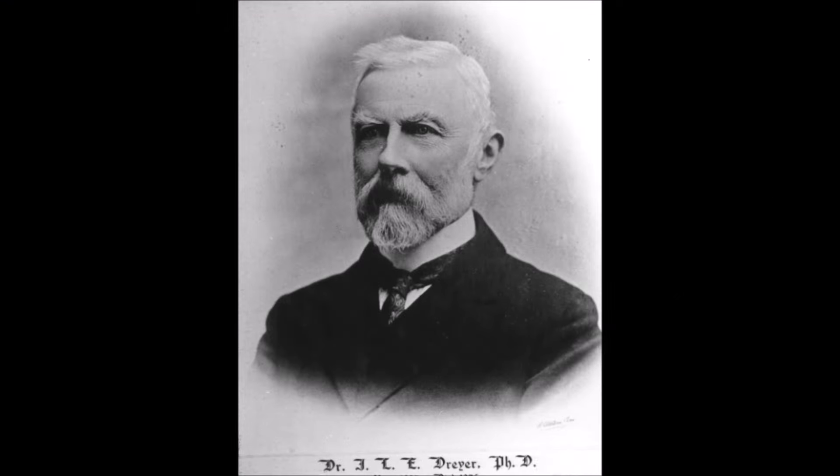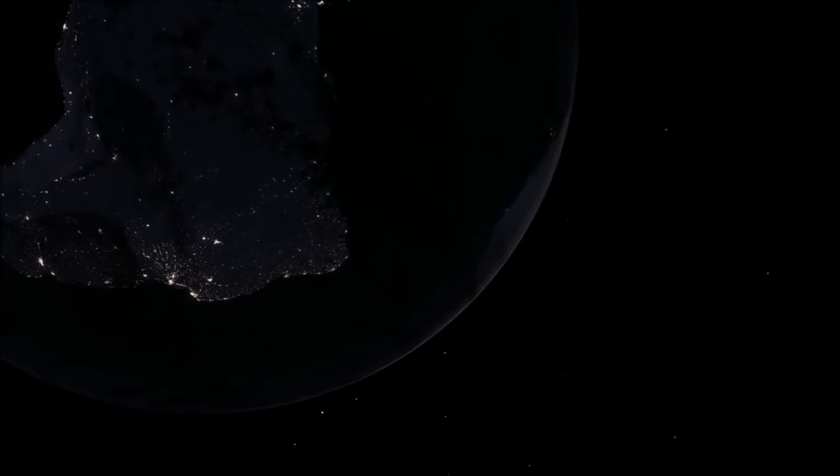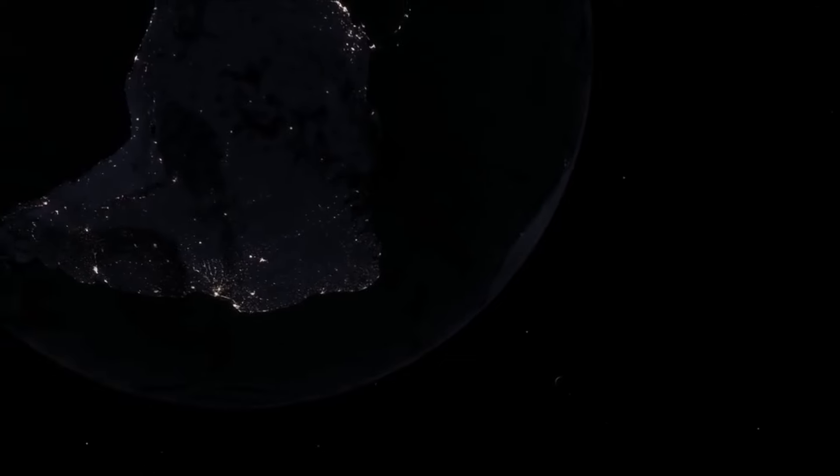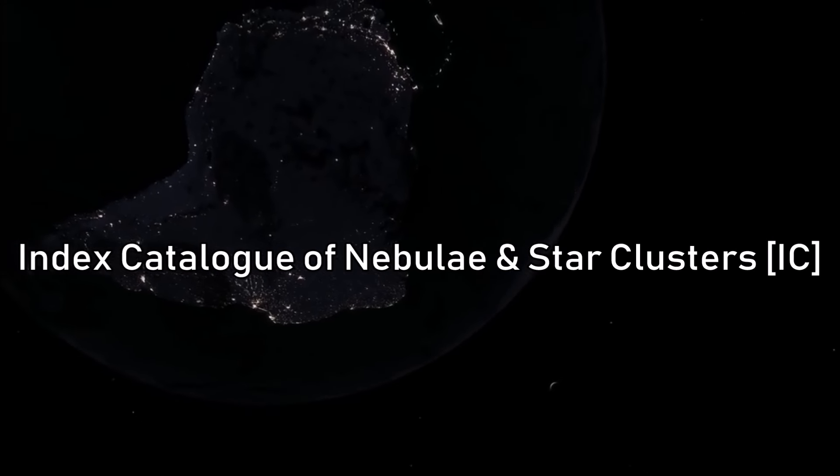In 1895, an astronomer by the name of John Louis-Emile Dreyer recorded it as the 1101st object of the index catalogue of nebulae and star clusters, hence coining its name of IC 1101.